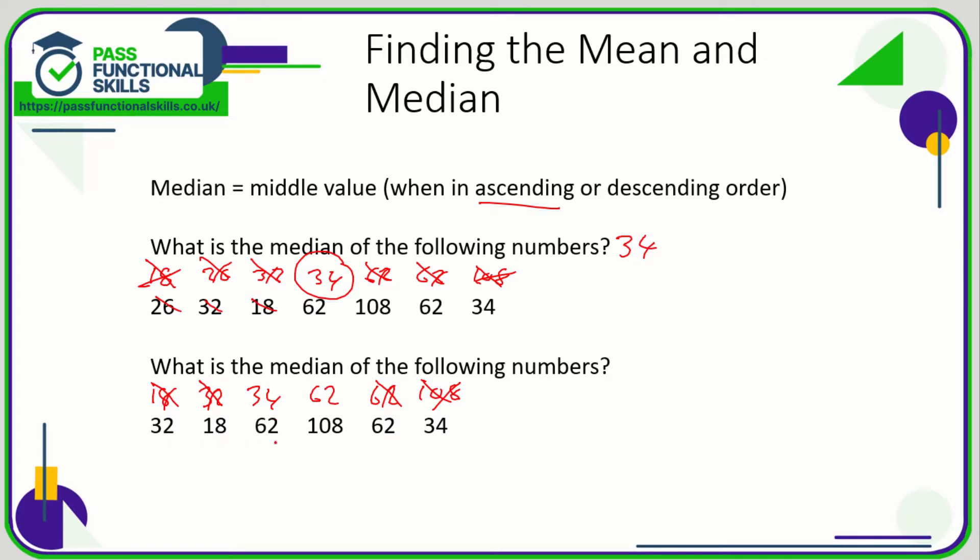That's because I have an even number of values. When you have an even number of values, you're going to get two in the middle. So it's actually easier when there's an odd number of values because the median is just the number in the middle. But here you've got two in the middle, so what we need to do is work out what is halfway between 34 and 62.